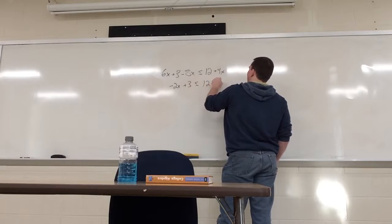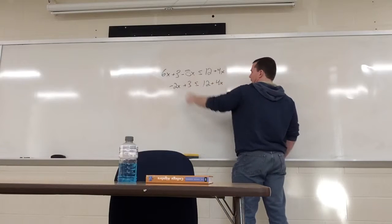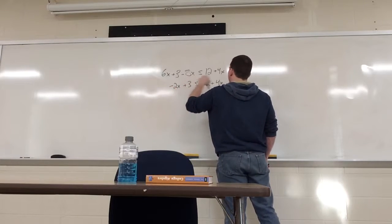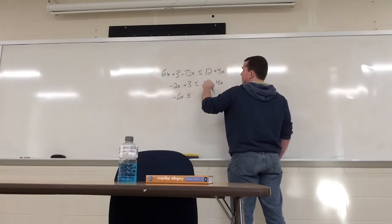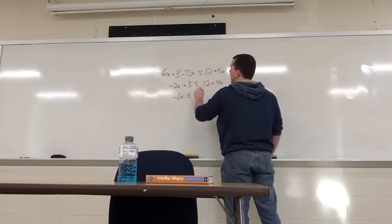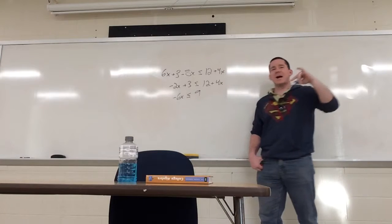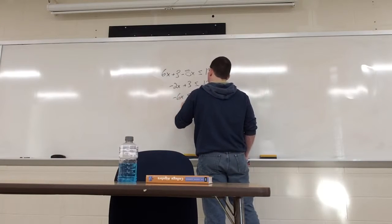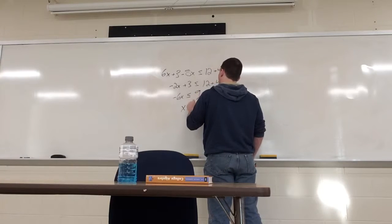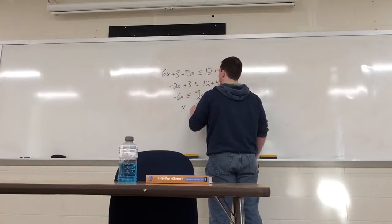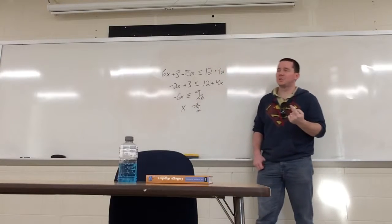Is less than or equal to 12 plus 4x? Subtract the 4x over. Minus 2x minus 4x is minus 6x. Is less than or equal to 12. Minus 3 is 9. And then divide by negative 6. Right? Right. So, you get x. 9 divided by negative 6. Is negative 3 over 2.